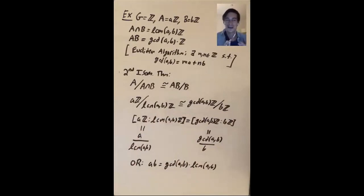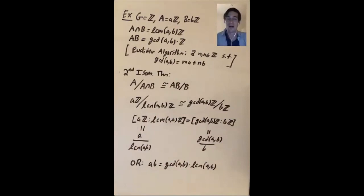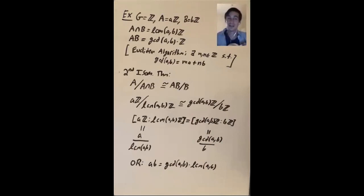The easiest proof of a·b = gcd(a,b)·lcm(a,b) is just looking at prime factorizations, but the point is: when you have a new theorem in group theory, apply it to easy examples like Z and see what it says. Hopefully you'll recover non-trivial facts that you already know.